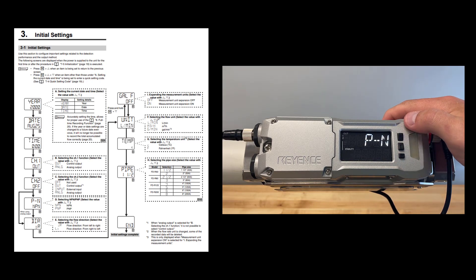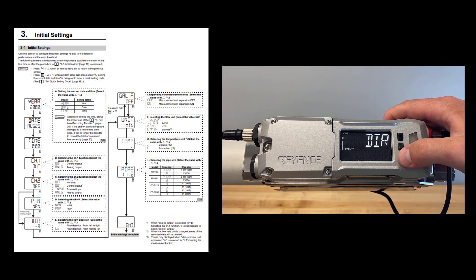Configure the signal that you need to come from these discrete outputs as being a PNP 24 volt output, or an NPN 0 volt output. Set the direction at which the flow of the liquid is going as either being from left to right, or from right to left.